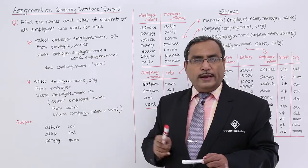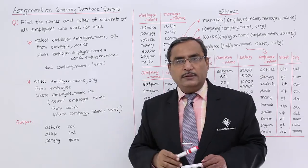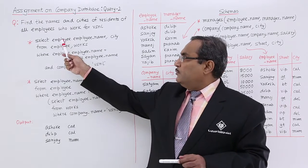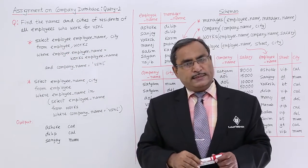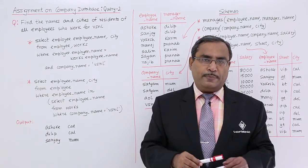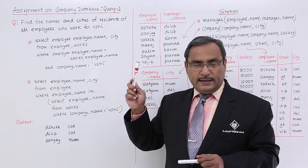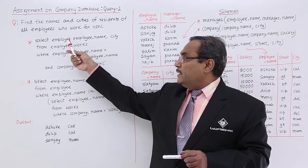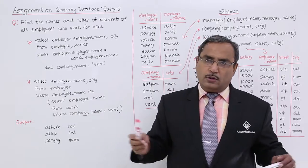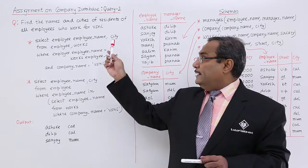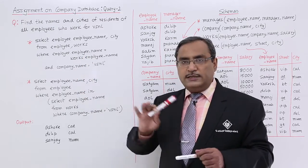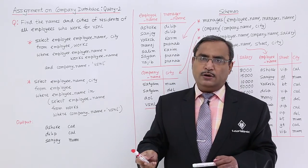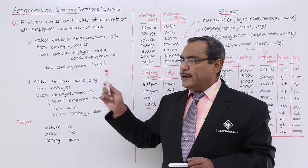Employee name is common between the employee and works tables, so if you just write employee_name that will produce ambiguity. Therefore, you must mention from which table we are picking up this employee_name — we have written employee.employee_name. Instead of employee.employee_name, we could also write works.employee_name because the condition implies both are equal. In case of city, it can only come from employee since the works table has no city attribute, so we can write employee.city or just city without ambiguity.